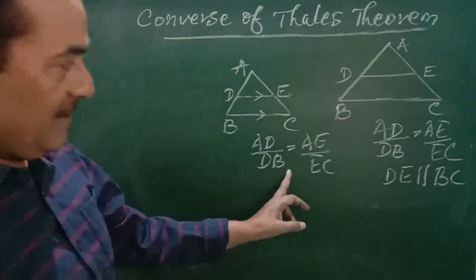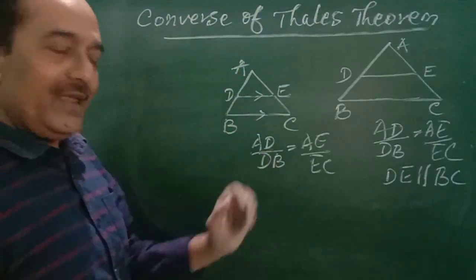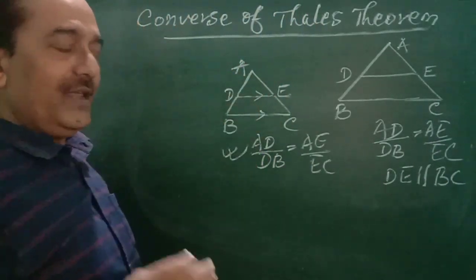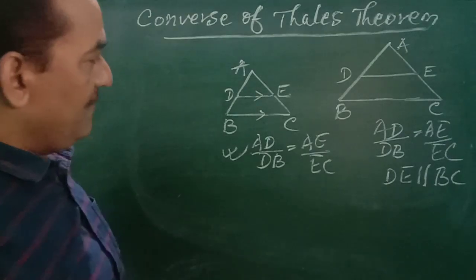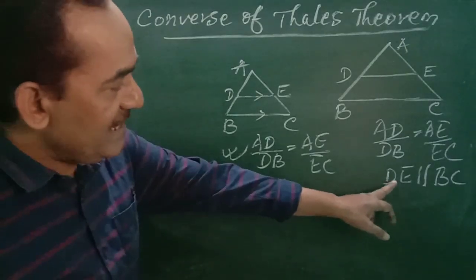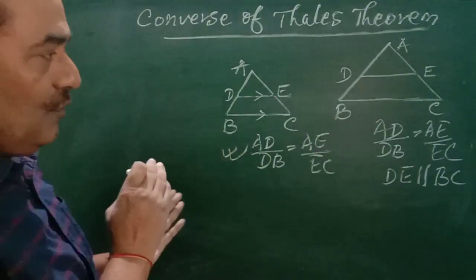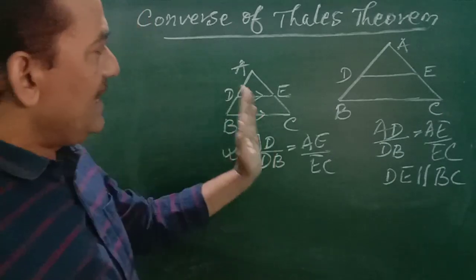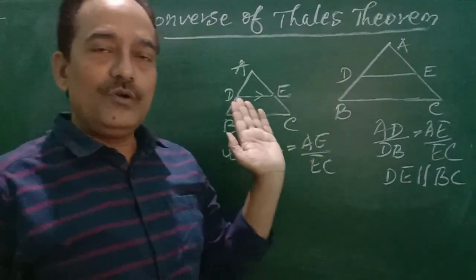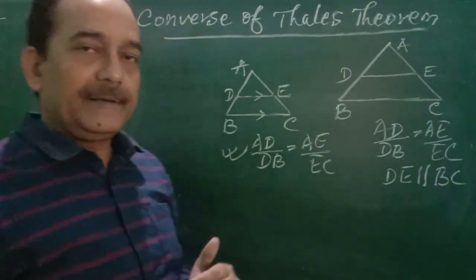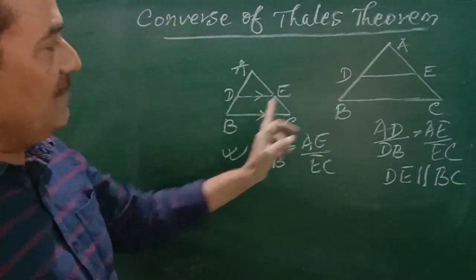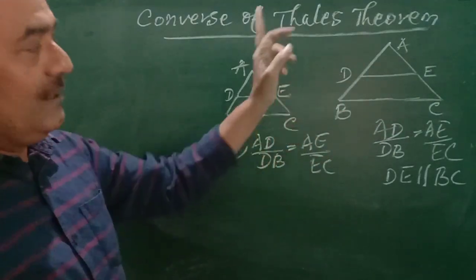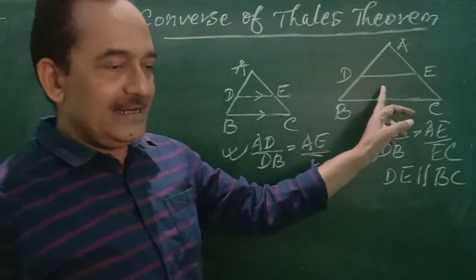It is given and we have to prove DE is parallel to BC. Since the given and the conclusion are swapped compared to the original theorem, we will call it the converse.